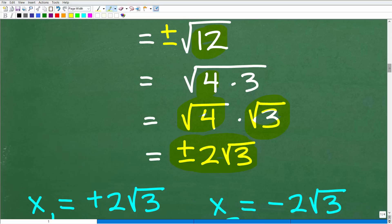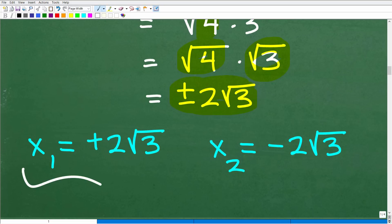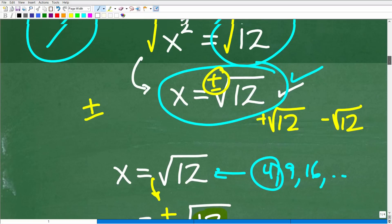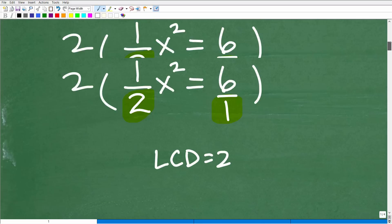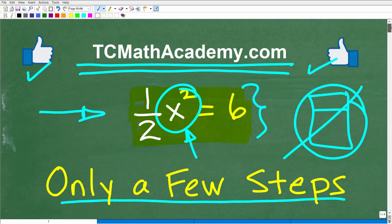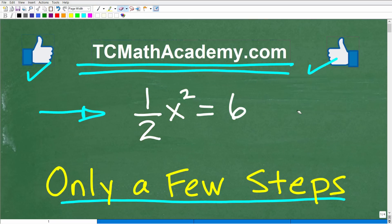And, again, these are two distinct, unique solutions. Our first solution would be a positive 2 times the square root of 3. And our second solution would be a negative 2 times the square root of 3. Okay. Now, you know, I did, obviously, a decent amount of explanation, but really not that many steps to solve a problem like this, right? Which is, again, a basic quadratic equation.